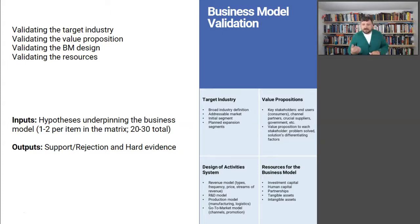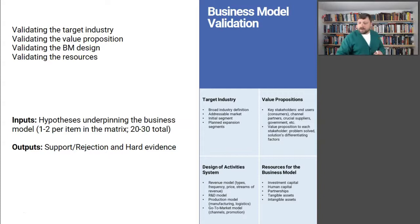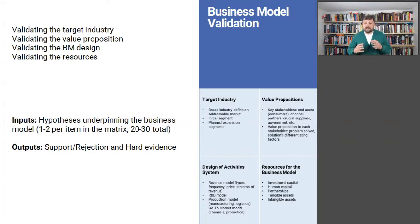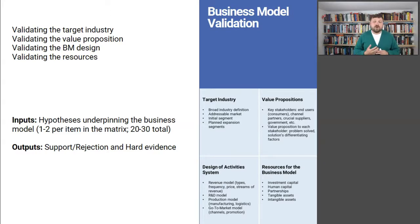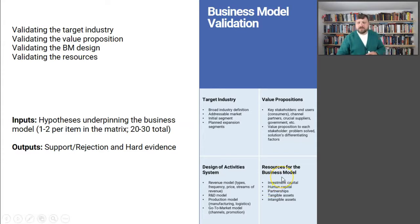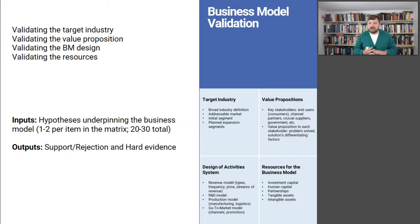Validating the production model means, for example, finding a manufacturer in China, talking to them, making sure they can deliver on those promises. Validating the go-to-market model is testing whether your channel to reach customers is reachable — you can do a pilot launch to see whether cost of customer acquisition is as expected, or talk to industry experts, a marketing company, or use other approaches. Validating resources means confirming you can acquire, develop, buy, or lease the necessary resources.